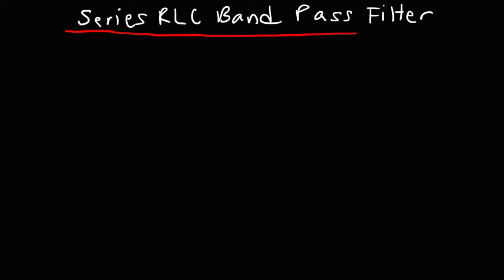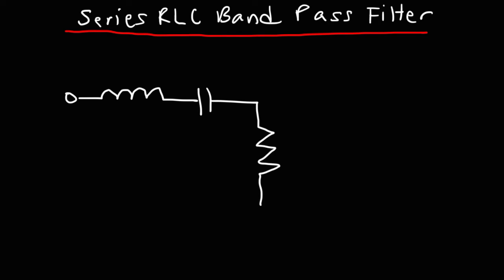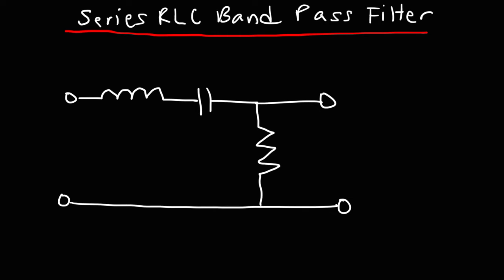In the last circuit, we talked about the parallel RLC bandpass filter. In this circuit, we're going to go over the series RLC bandpass filter. The first thing we need to do is put the inductor in series with the capacitor, and these two will trade places with the resistor. So the circuit that we need looks like this — this is L, that's C, and this is R.